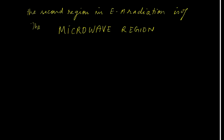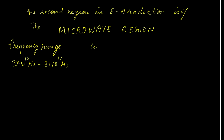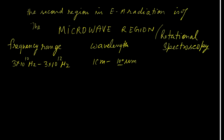The next is the microwave region. The frequency range for the microwave region lies from 3 into 10 raised to the power 10 hertz to 3 into 10 raised to the power 12 hertz. The wavelength of this region lies from 1 centimeter to 100 micrometers. A special point is that this microwave region is observed in rotational spectroscopy. So the frequency range and wavelength range are as stated above.